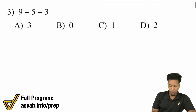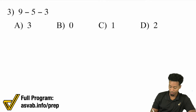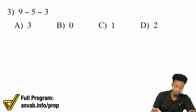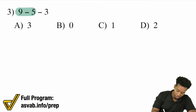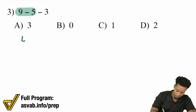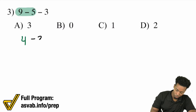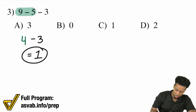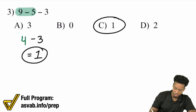Number 3: We have 9 minus 5 minus 3. You're going to work left to right. So 9 minus 5 is going to be 4. And then 4 minus 3 equals 1. Answer is C again.